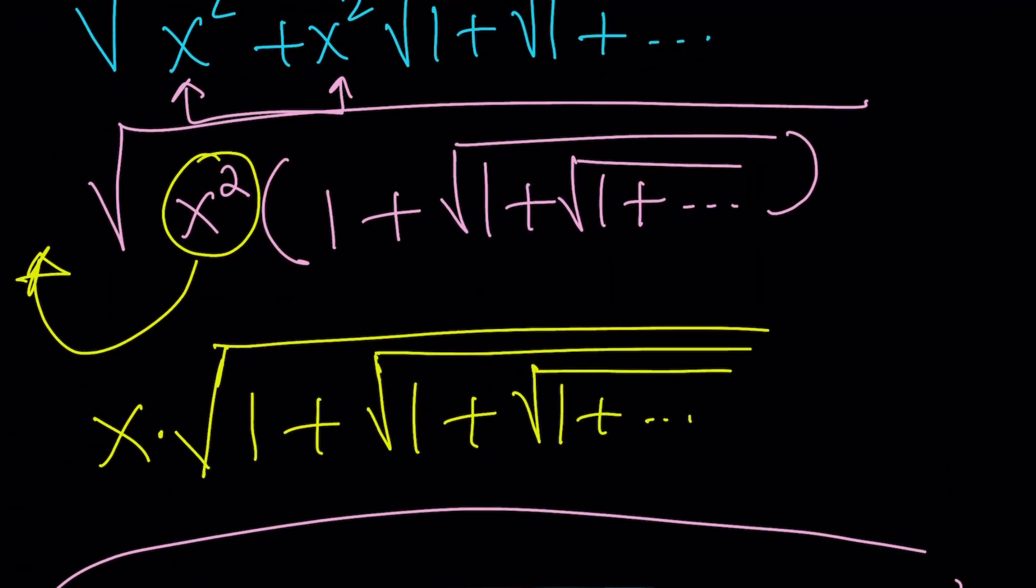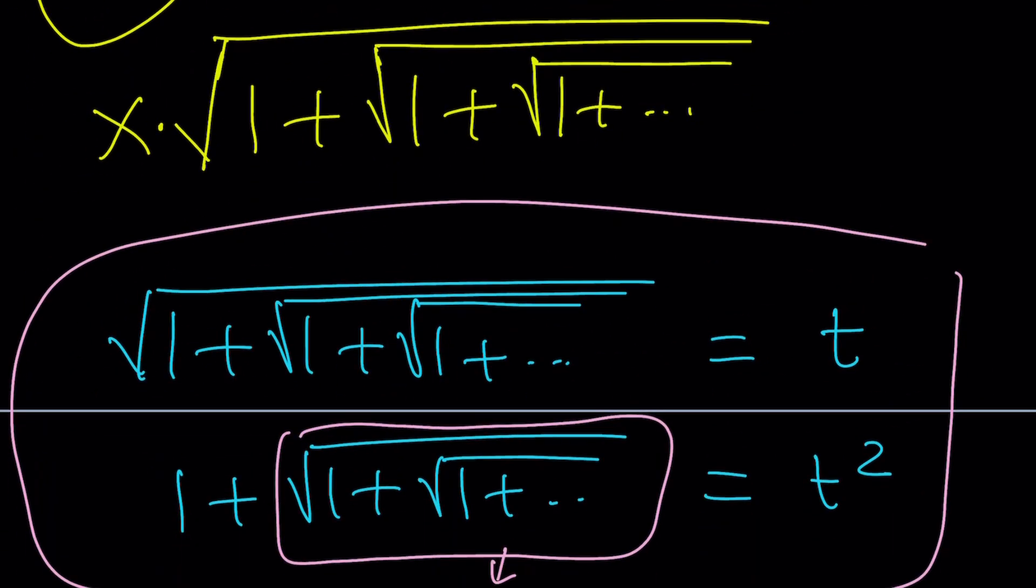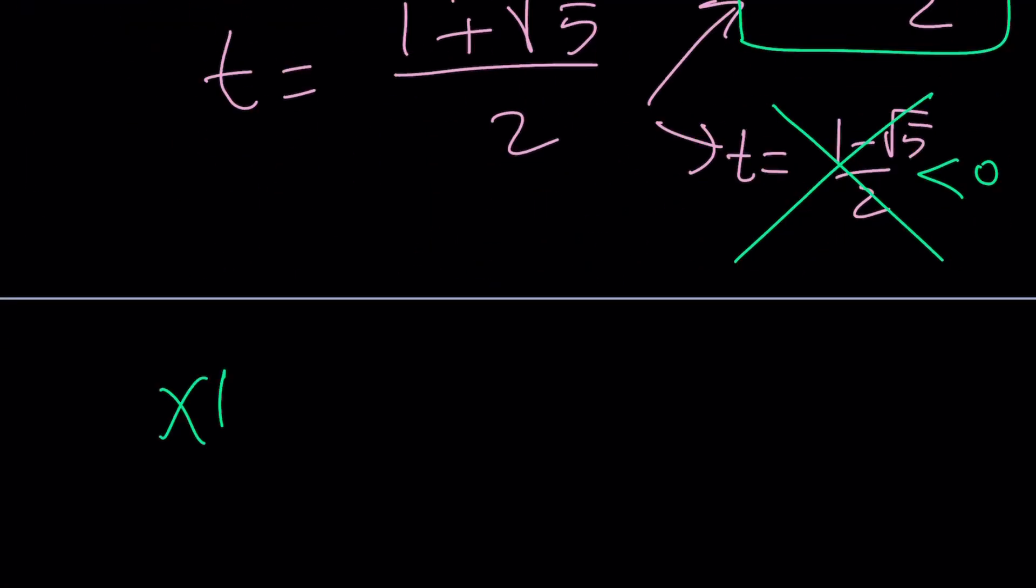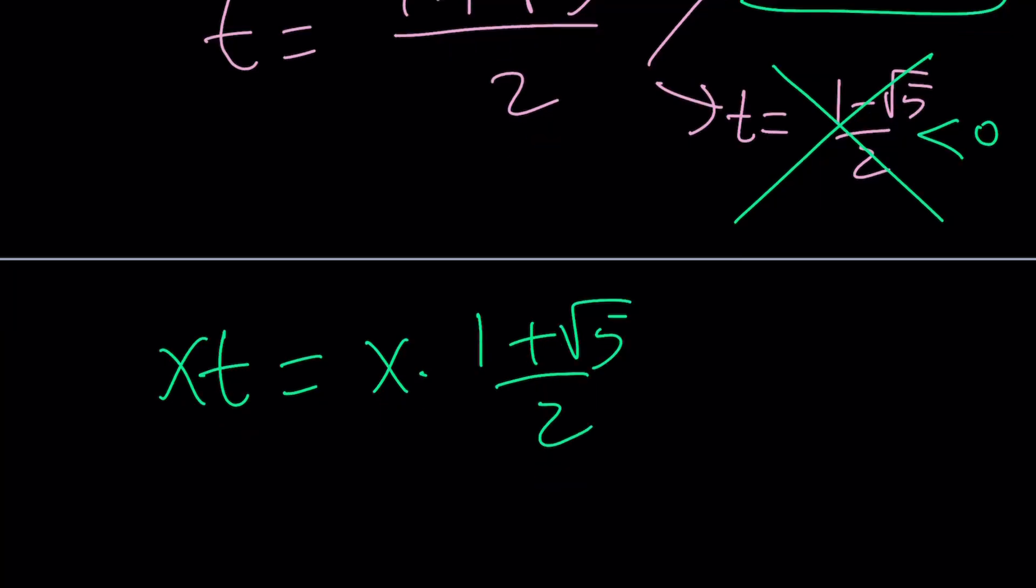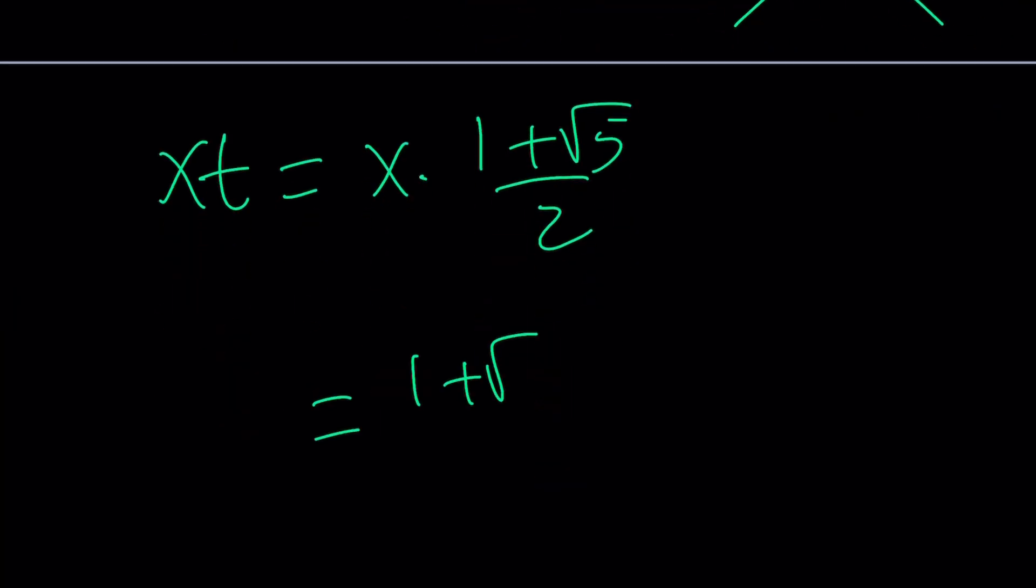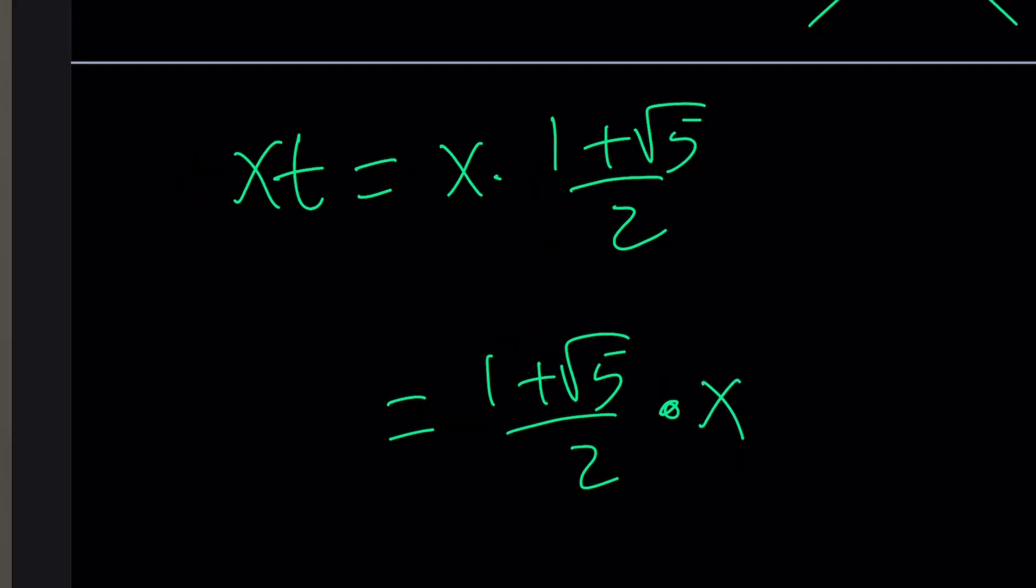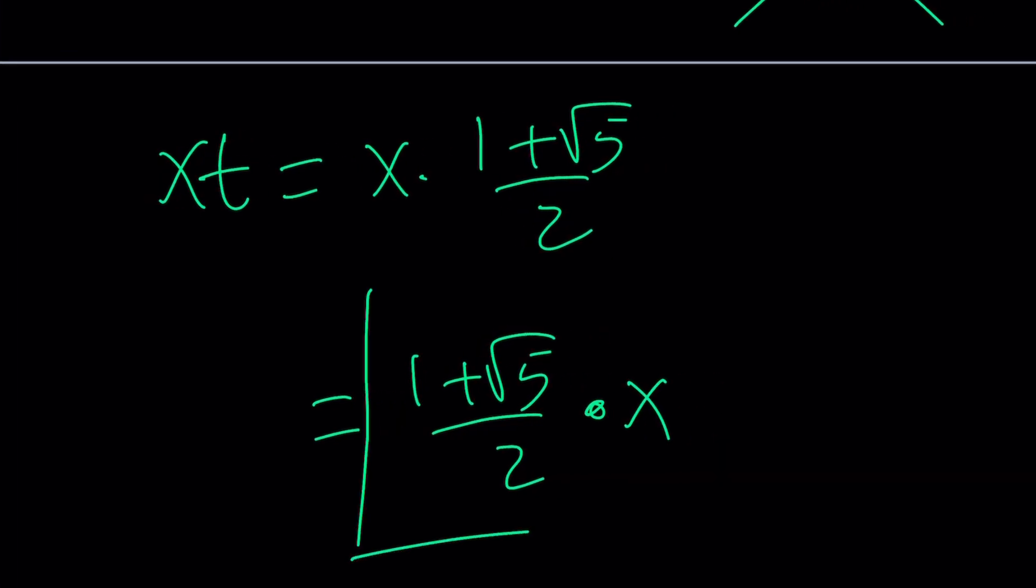That's t. And I'm multiplying x by t. Because this is xt, right? So what is xt? xt is equal to x times 1 plus root 5 over 2. Or if you want to write it as 1 plus root 5 over 2 times x, that will be the answer for this problem.